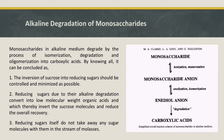Monosaccharides in alkaline medium degrade by the process of isomerization, degradation, and oligomerization into carboxylic acids. From the figure we can see how these reactions occur. It can be concluded that: 1. The inversion of sucrose into reducing sugars should be controlled and minimized as much as possible.